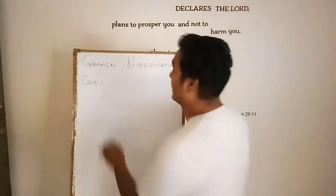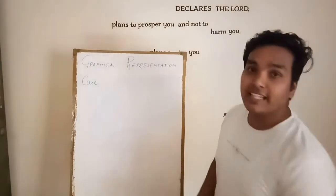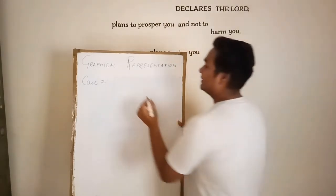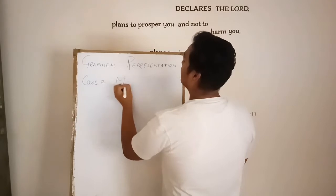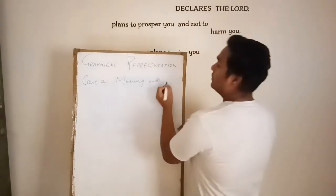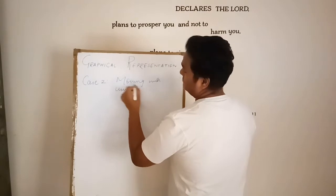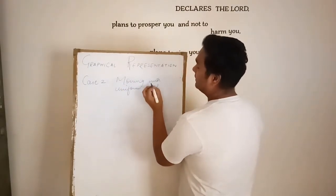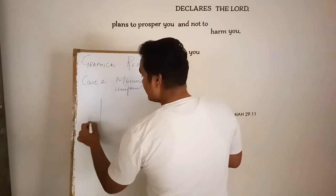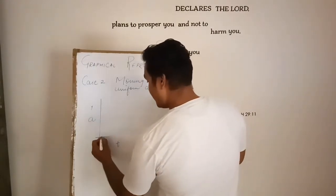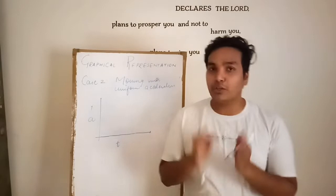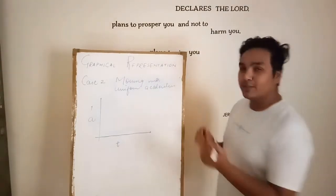The second case states that when a body is moving with uniform acceleration — uniform means same acceleration — the graph would be a straight line. This is the acceleration-time graph for the second case.